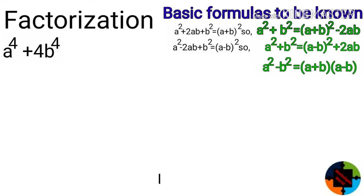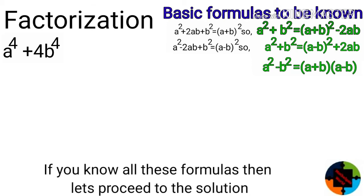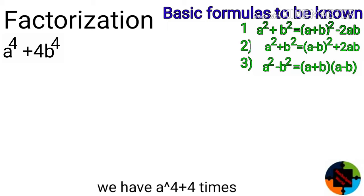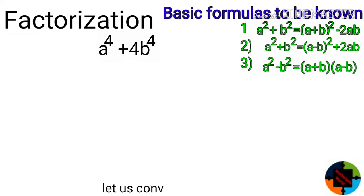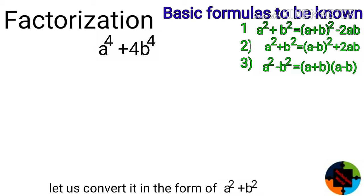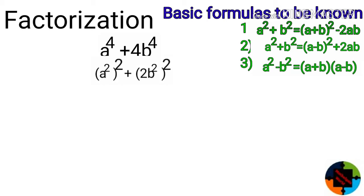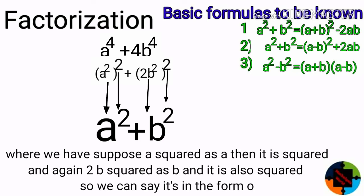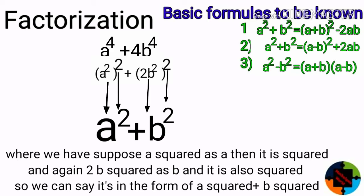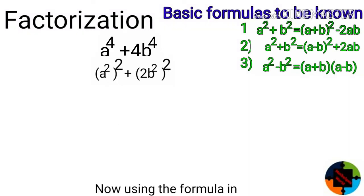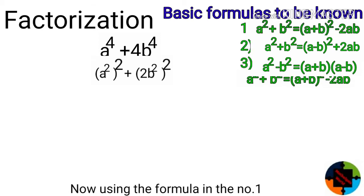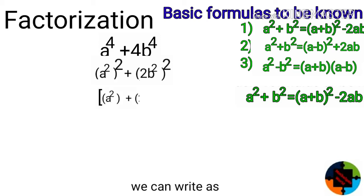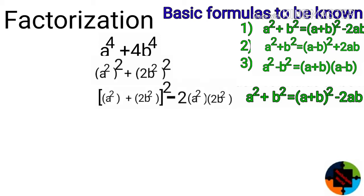Now let's proceed to the solution. We have a to the power 4 plus 4 times b to the power 4. Let us convert it in the form of a squared plus b squared — that is, a squared whole squared plus 2b squared whole squared. Using formula number one, we can write this as a squared plus 2b squared whole squared minus 2 times a squared times 2b squared, where a squared takes the place of a and 2b squared takes the place of b.